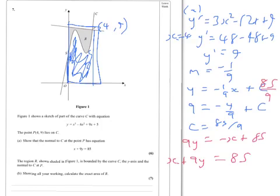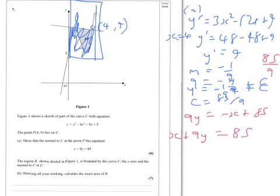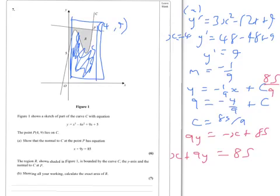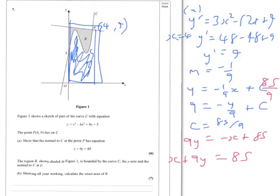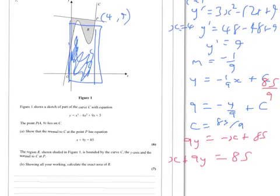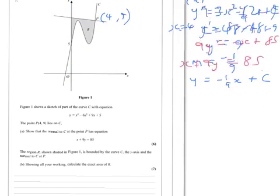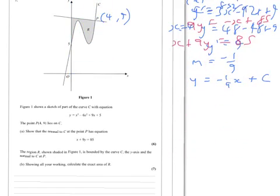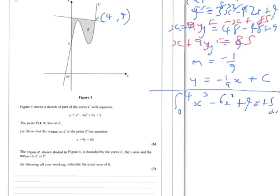So we need to first integrate the curve. Let's first integrate to find the area. P is the point (4,9), so we're integrating between the x coordinate 0 and 4. The integral from 0 to 4 of x³ - 6x² + 9x + 5 with respect to x.